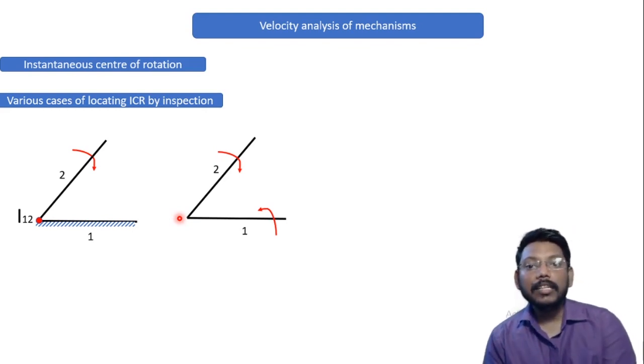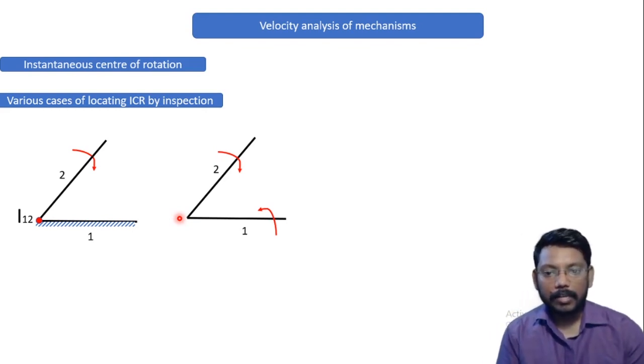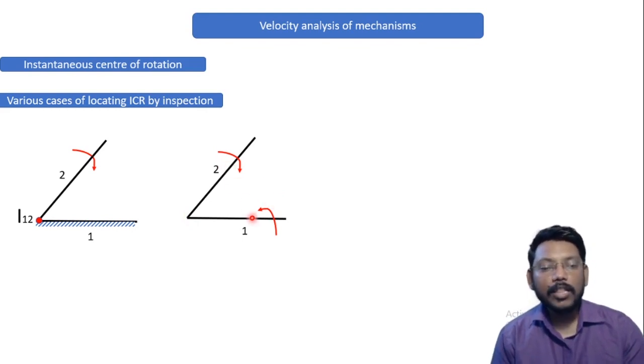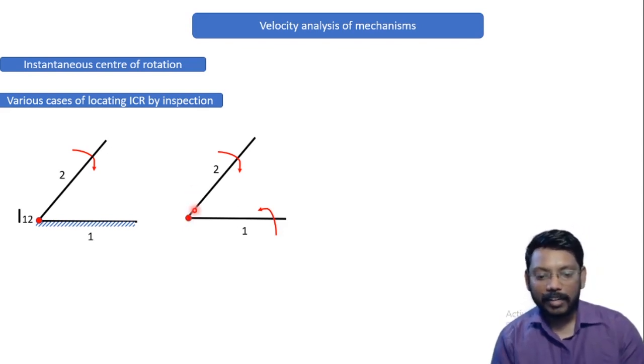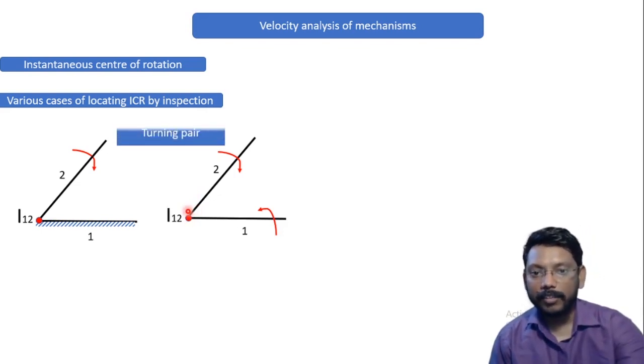So as we can see the intersection is over here. So this point will become my ICR for both this link and the name will be ICR12. Now these kind of pairs are called as turning pair.